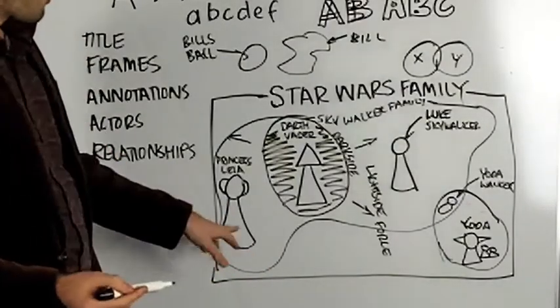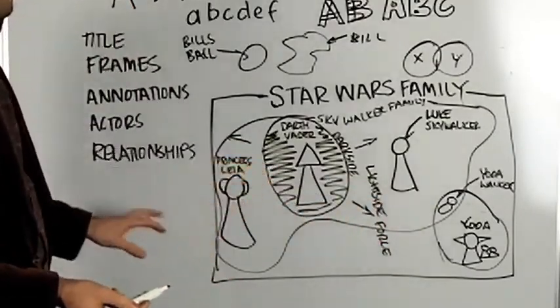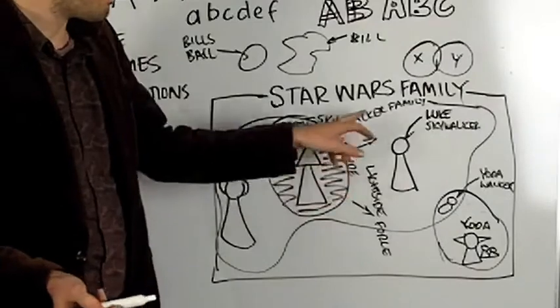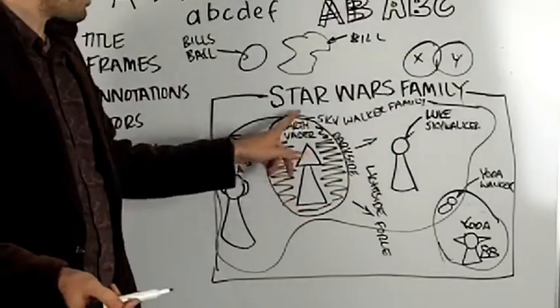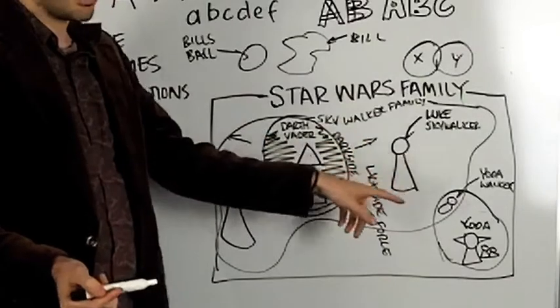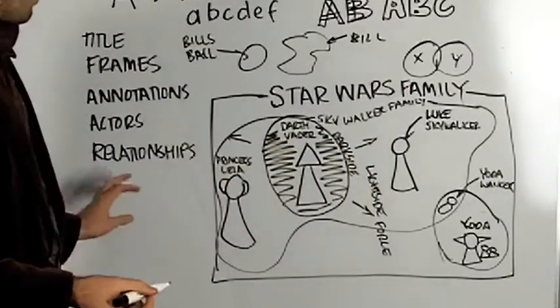So we've got actors, we've got Princess Leia, Darth Vader, Luke Skywalker and Yoda and his family. We have annotations, we've annotated every part of the model so far. We have frames, we have the dark side, we have the Skywalker family, the Yoda family, we have the Star Wars family and we have relationships.